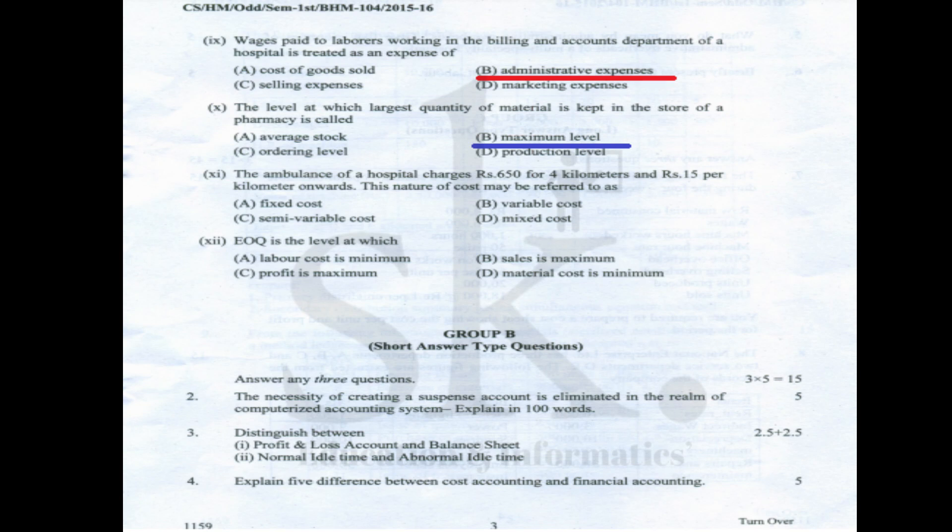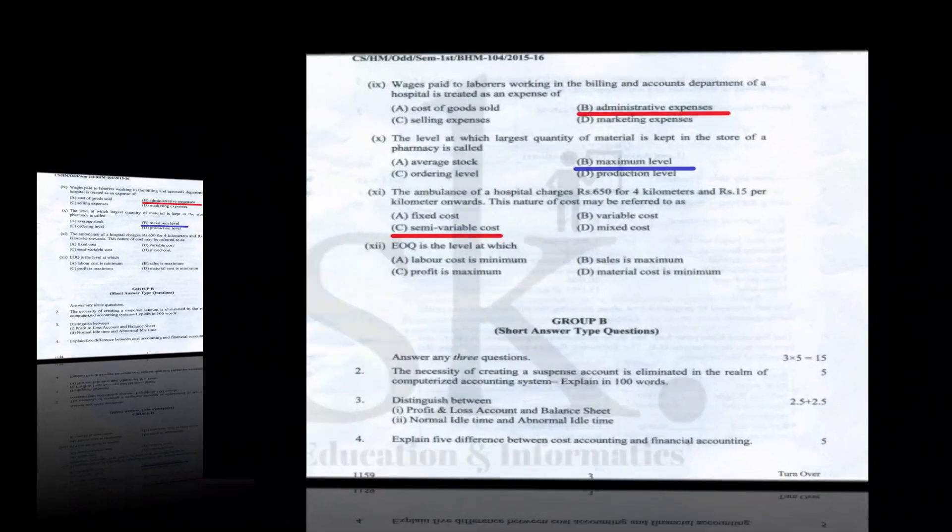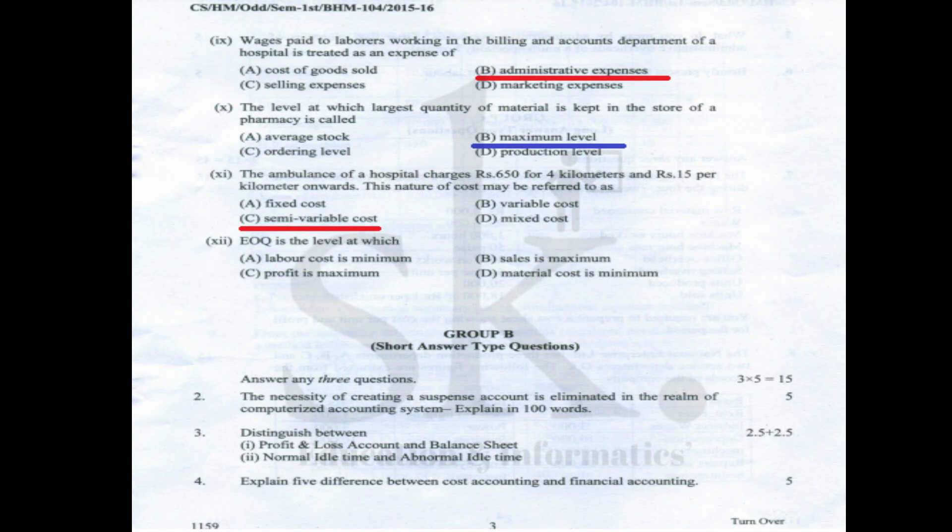Question number ten: the level at which the largest quantity of materials is kept in the store of a pharmacy is the maximum level. The correct option is B.